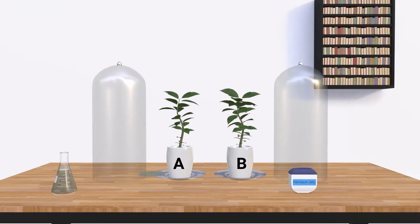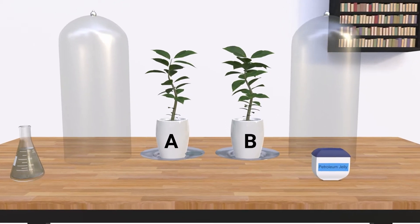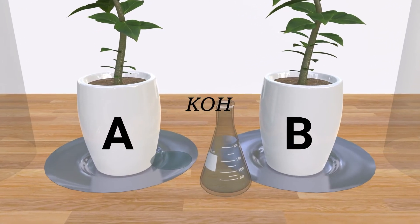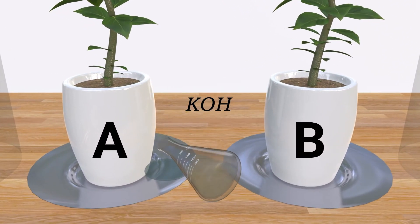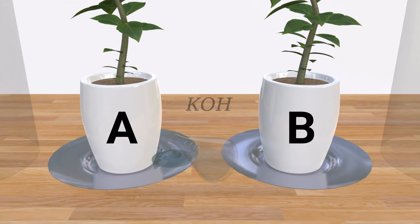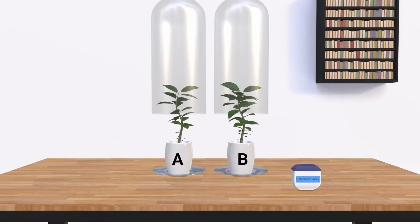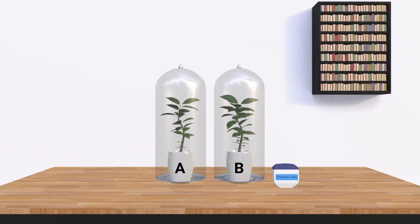After three days, place a watch glass on the glass plate of plant A and add potassium hydroxide, which has the property to absorb carbon dioxide. Cover both plants with separate glass jars and use petroleum jelly to seal the bottom of the jar to make it airtight.